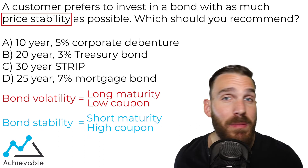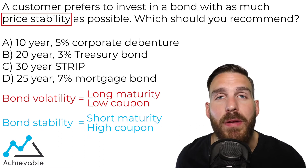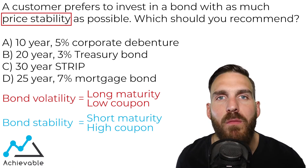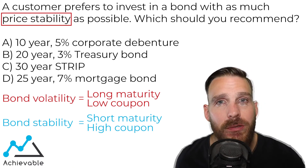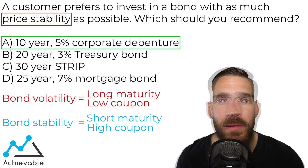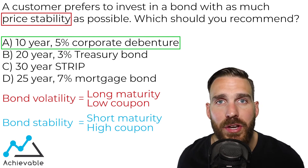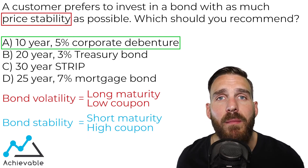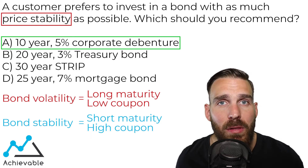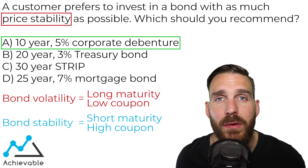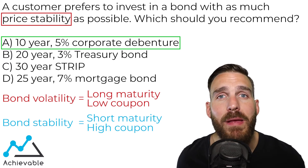When it comes to bond price stability or volatility, maturity is the most important factor. The coupon only comes into play if two bonds have similar maturities. So right away, if you went with Answer A, that is the correct answer — by far the shortest-term maturity, and therefore it exhibits the most price stability. If there had been another 10-year bond, you'd look for the one with the higher coupon, since we want short maturities and high coupons for price stability.